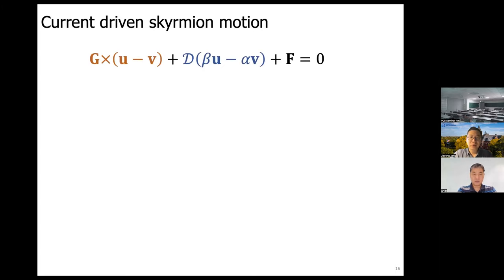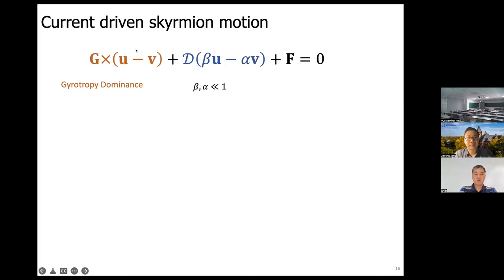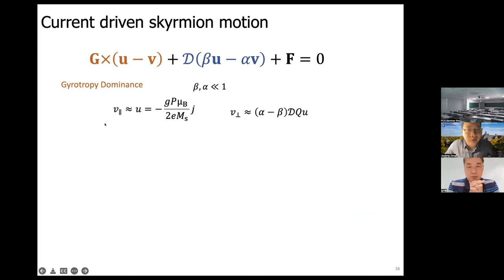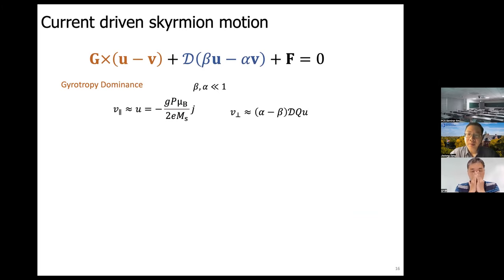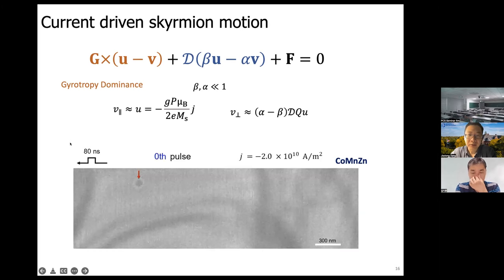After some manipulations you obtain the Thiele equation of motion, which well describes skyrmion dynamics. It can be grouped into two terms: the gyrotropic term, where G is a vector along z with amplitude 2π times the topological charge, and the dissipative term. The key result is that the skyrmion has a transverse velocity proportional to the difference between α and β, and more importantly proportional to the topological charge.